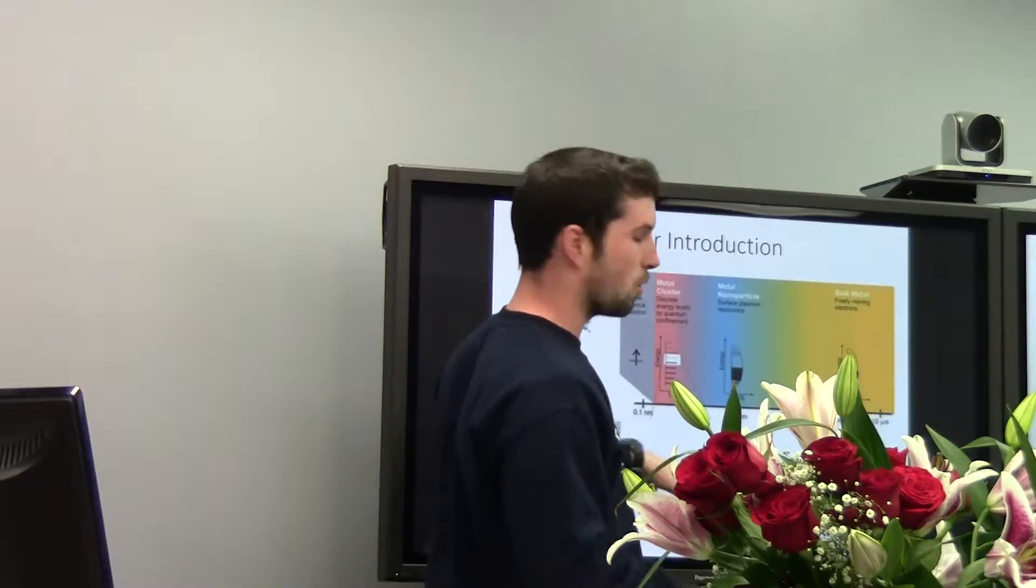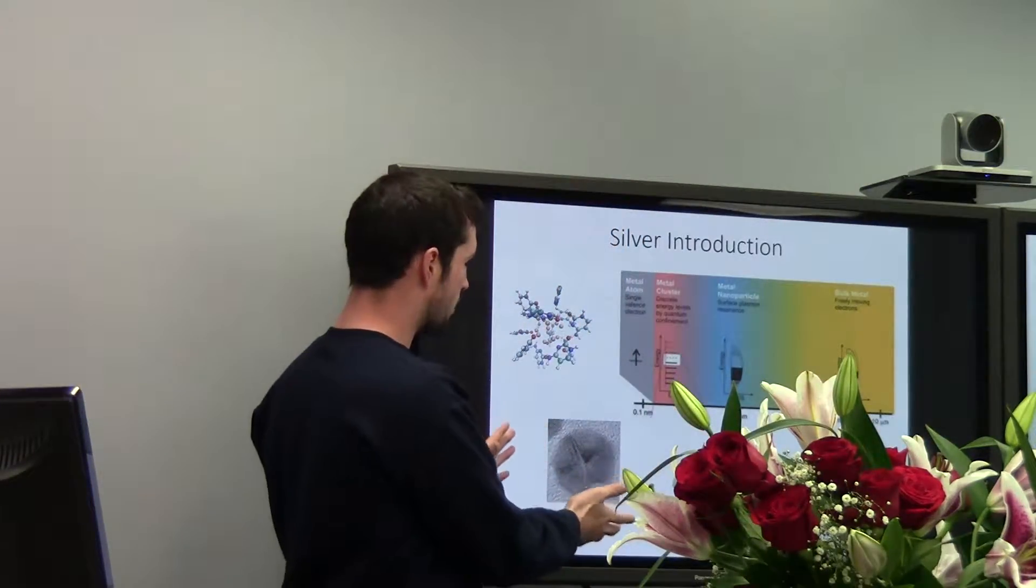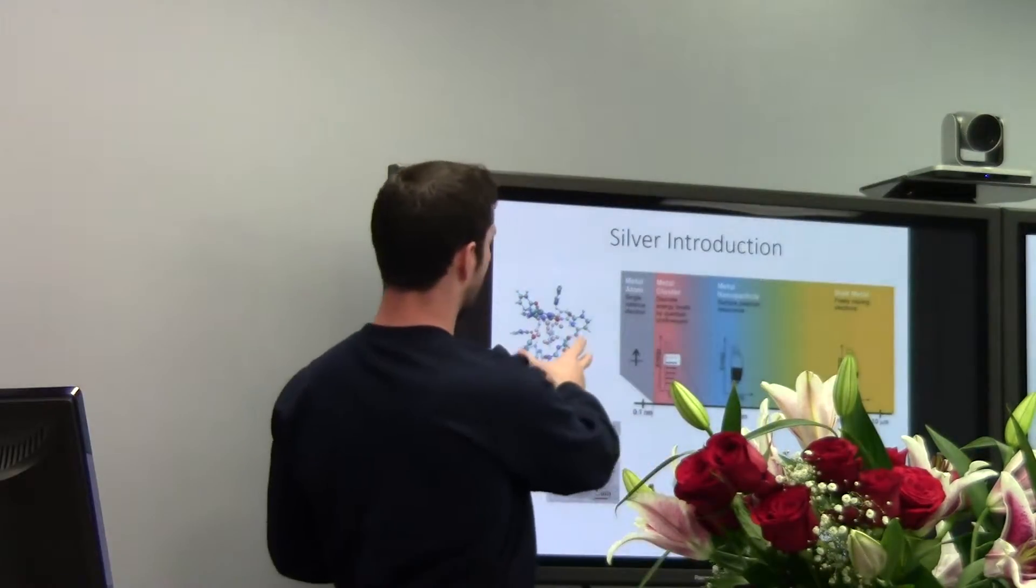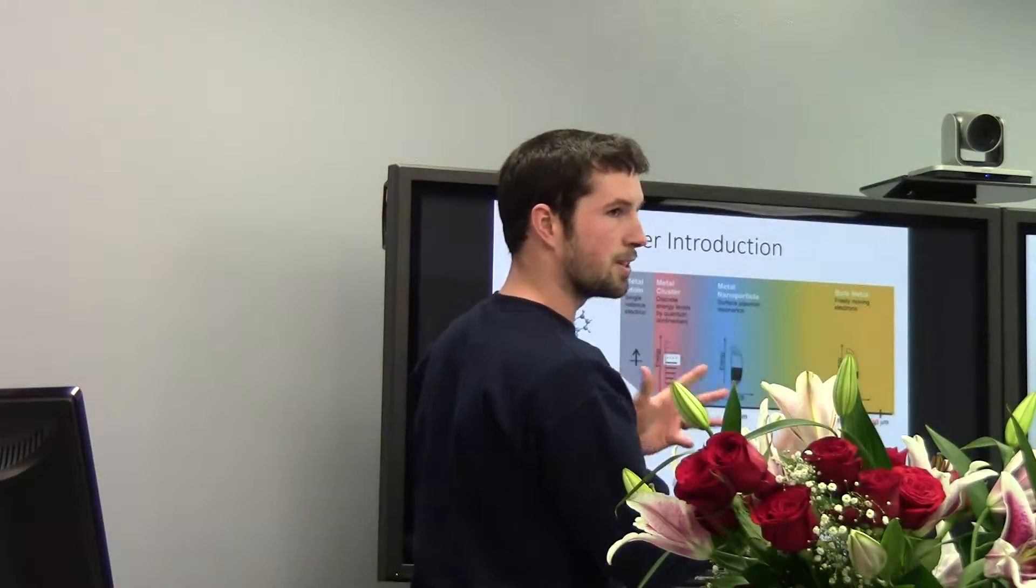Here you can see we have silver in the bulk, just a silver metal block. This, if you look, is a TEM image of a silver nanoparticle that's about 6 nanometers in diameter. Here's a model that we'll be working with later, a silver nanocluster that's only 13 atoms total.